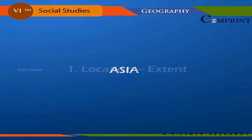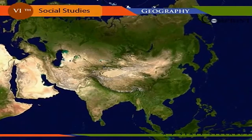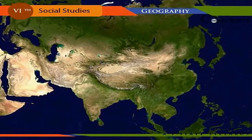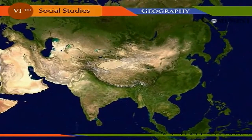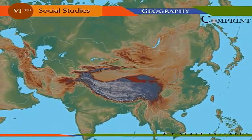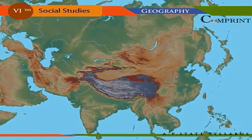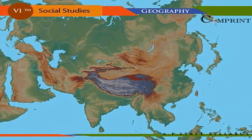Asia is the largest continent in the world. It extends from the tropical zone to the polar zone, from 10 degrees north to 80 degrees north latitude, and from 28 degrees east to 170 degrees west longitudes.